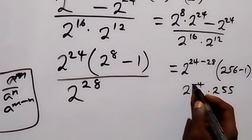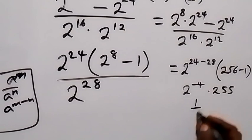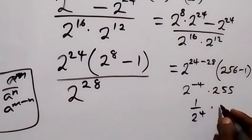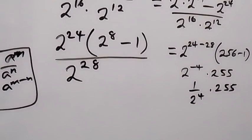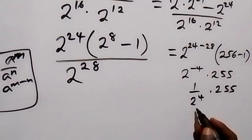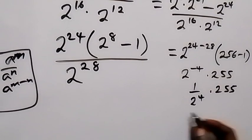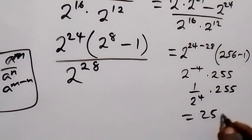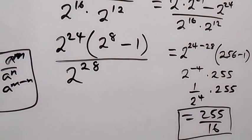This is a negative power, which is also fractional, so we are having 1 over 2 raised to power 4, times 255. From here we can write 2 raised to power 4 as 2 times 2 times 2 times 2, that's 16. So the answer here will be 255 divided by 16. That's the simplified form of what we have.